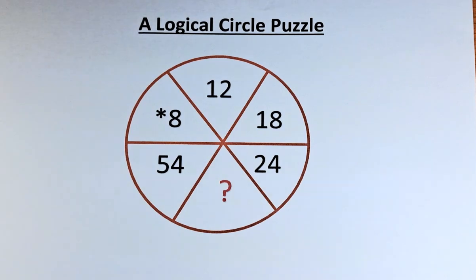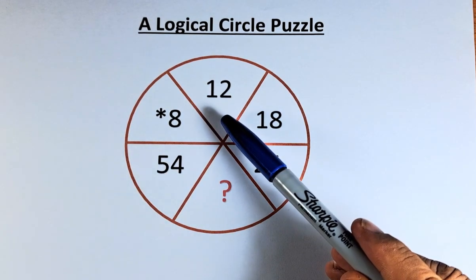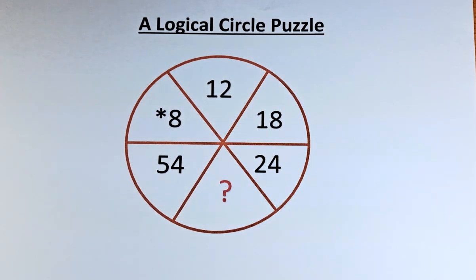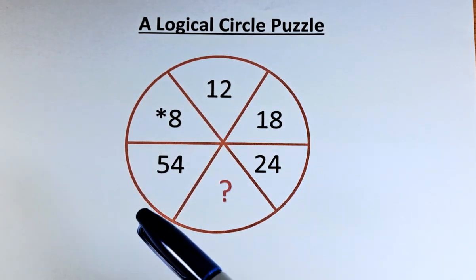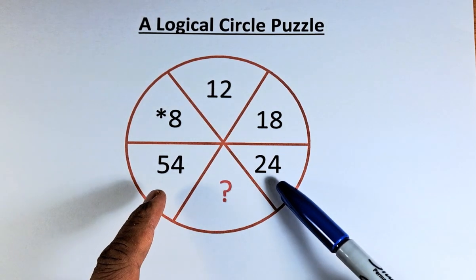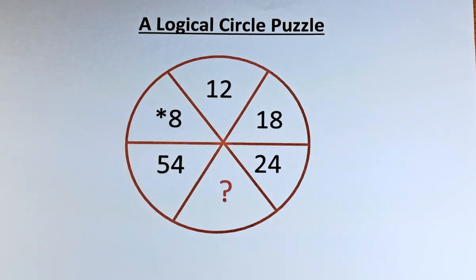If you look at the puzzle, from 8 to 12, you add 4. 12 to 18, you add 6. 18 to 24, you add 6. 24 to a number, and then a number to 54, you need to find what is added. The difference between 24 and 54 is 30, so you're going to add 15. So it doesn't make any sense.